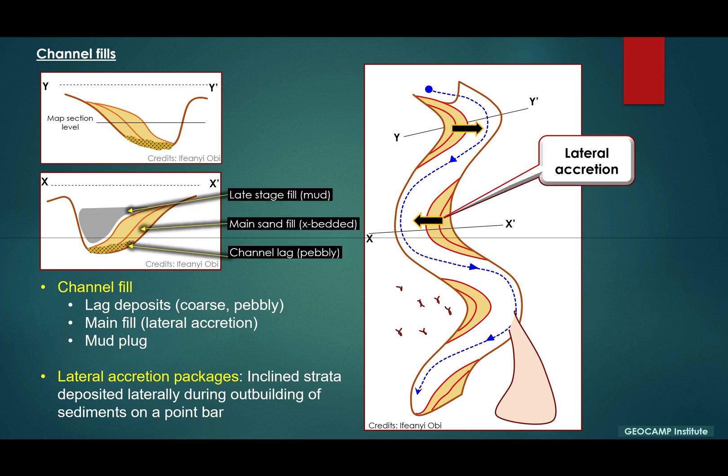So in this section, we have the basal channel lag deposits, which are dominantly pebbly and poorly sorted. We have the main sand fill, which is sometimes bioturbated with crossbeds, and they are sometimes fairly well sorted. And the late stage or abandonment facies, which in this case are usually fines or muddy.